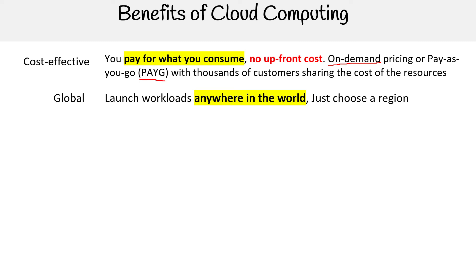Another benefit is that cloud computing allows you to go global within minutes. If you want to launch a workload in Canada, the US, the UK — wherever the provider has a region — you just choose that region and launch. That's a huge advantage over having a server in-house, where an on-premises setup might only have two data centers in the US, which is just not sufficient.